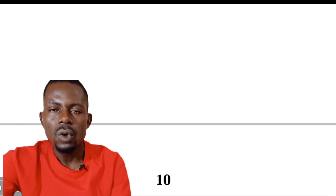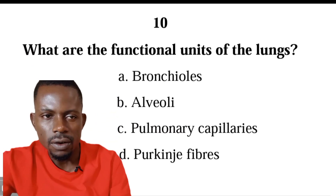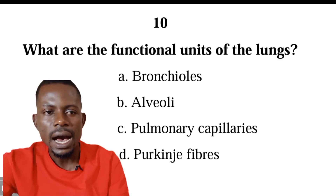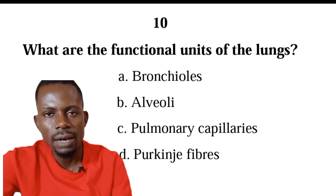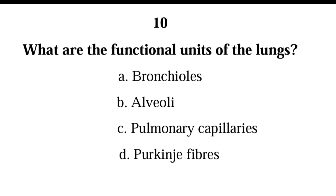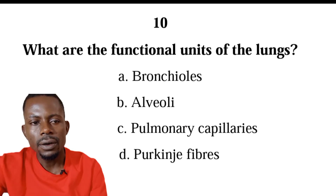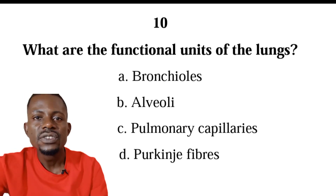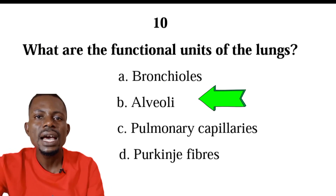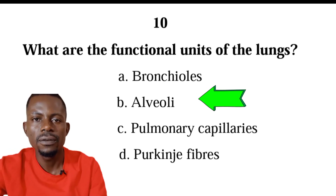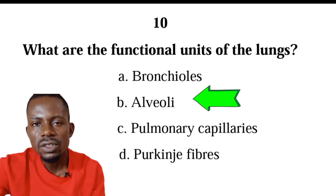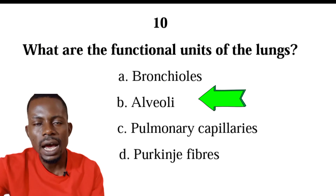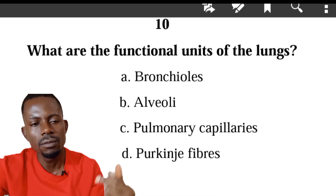Number ten: what are the functional units of the lungs? We have bronchioles, alveoli, pulmonary capillaries, or Purkinje fibers. The correct answer is B, alveoli. Alveoli are the functional units of the lungs — they give oxygen to blood and receive carbon dioxide from blood.